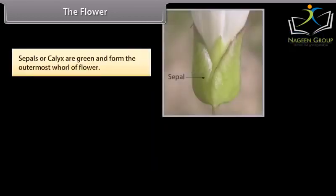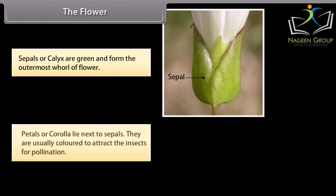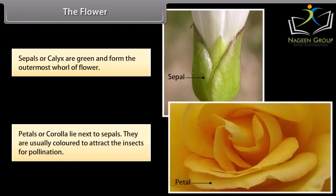Sepals or calyx are green and form the outermost whorl of flower. Petals or corolla lie next to sepals. They are usually colored to attract the insects for pollination.